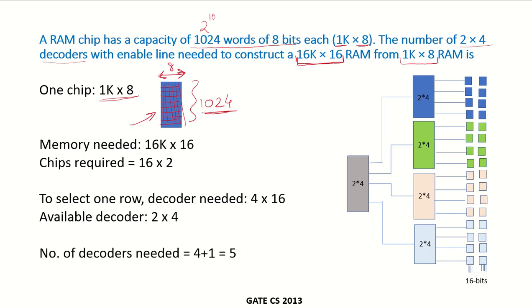The memory that is required is 16K by 16. That means 16 bits should be there in each row. If we keep 2 such chips like this in one row, then we can get 16 bits because each chip is of this type. This is also having 8 bits. This is also having 8 bits in each row. We can have 16 bits in each row if we place the chips like this.